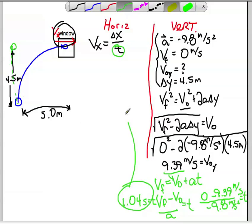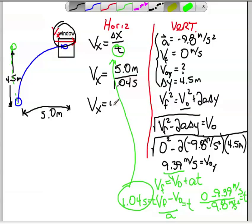and ultimately, that's going to get substituted right up there into the horizontal equation. So I'm going to get now vx is equal to 5 meters divided by 1.04 seconds, and my horizontal component of velocity turns out to be 4.8 meters per second.